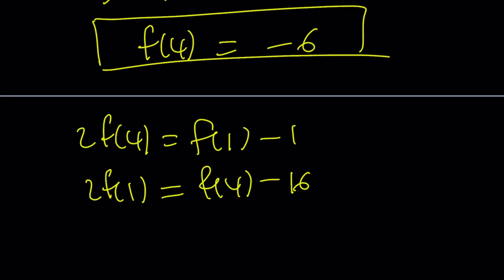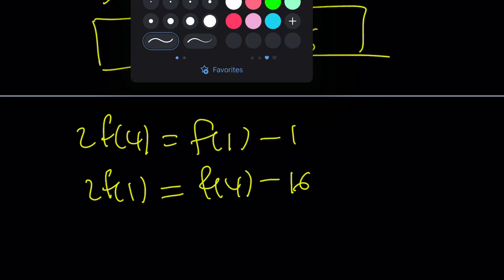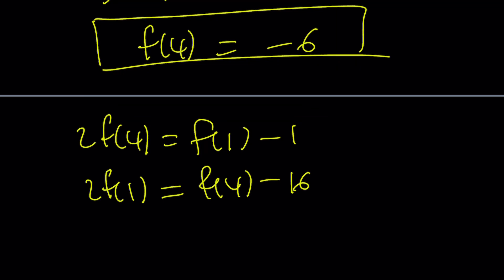I'm going to go ahead and multiply both sides of the first equation by negative 2. And that kind of makes sense because if I'm trying to solve for f of 4, I'd like to get rid of f of 1.